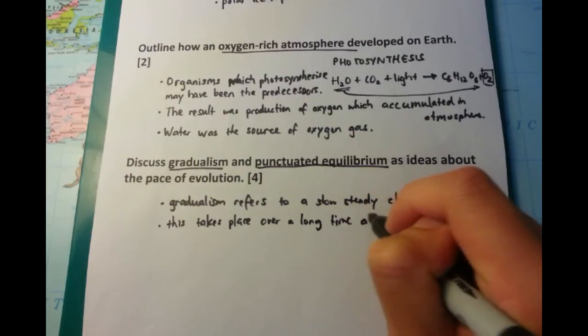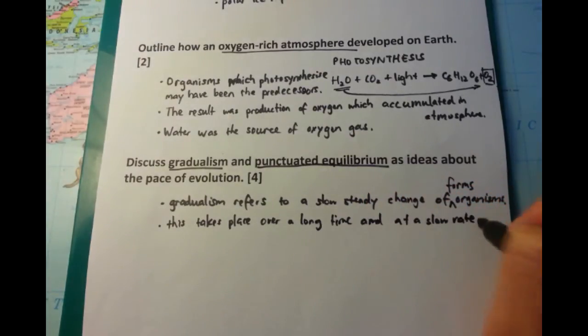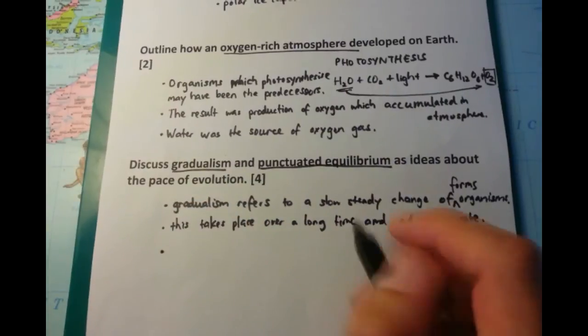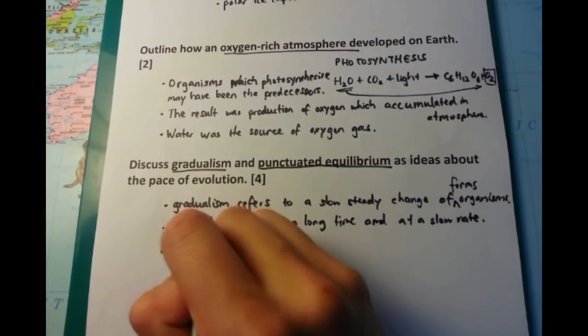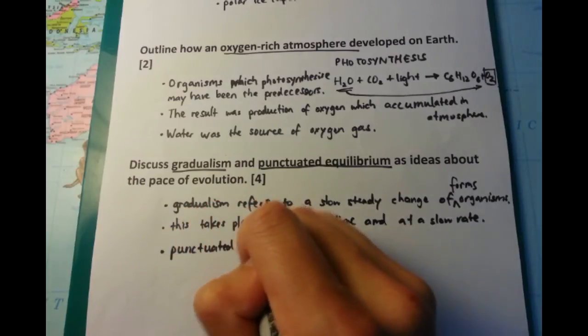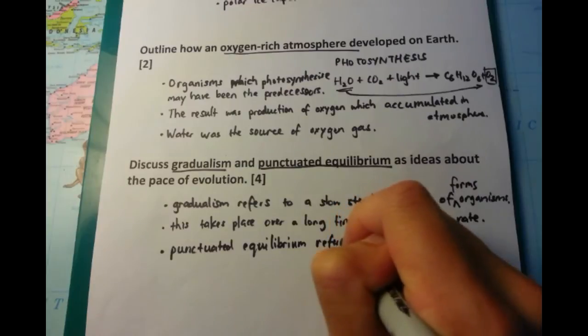The next thing we're going to talk about is punctuated equilibrium. And my understanding of punctuated equilibrium is that this one has a bit more oomph behind it. There's a bit more evidence behind punctuated equilibrium as opposed to its brother, gradualism. But let's talk about what it is first. It refers to evolution, which occurs,